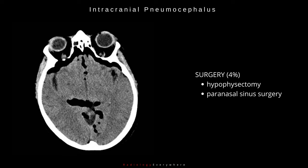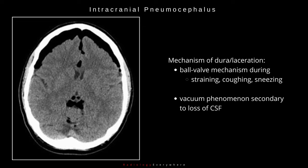The fourth group is due to post-surgical pneumocephalus. The mechanism of dura laceration can be due to a ball valve mechanism during straining, coughing, sneezing, or a vacuum phenomenon secondary to loss of CSF.